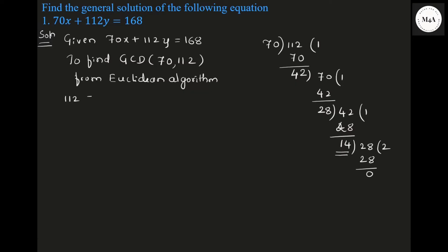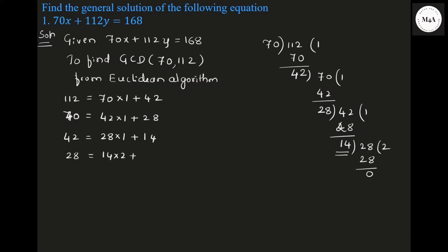From the Euclidean algorithm: 112 can be written as 70 into 1 plus 42. Then, 70 is written as 42 into 1 plus 28. Then, 42 is written as 28 into 1 plus 14. And 28 is written as 14 into 2 plus 0. Therefore, GCD of 70 and 112 is 14.